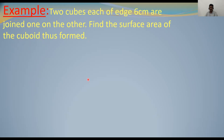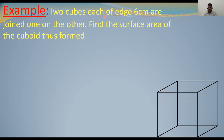I will show you the diagram also. Observe one thing: these two cubes are joined one on the other. This question is not in your textbook, so listen properly. For example, there is a cube. Two cubes each of edge 6 cm are joined one on the other. The edge of a cube is 6 cm. Because it is a cube, all the edges are equal — so it is 6. Length is 6, breadth is 6, height is also 6.